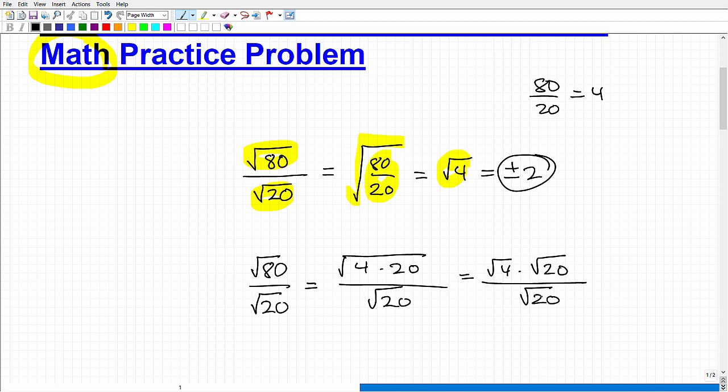So I can write this as the square root of 4 times the square root of 20 over, I have the square root of 20 down here, right? Square root of 20. So that's the square root of 20. So you can see how you can get to this answer in a couple of different ways. This is not the most effective way, but you can kind of say, oh, I have a square root of 20 up here. These are factors. I could cross-cancel. I'll have the square root of 4, which again is positive and negative 2.